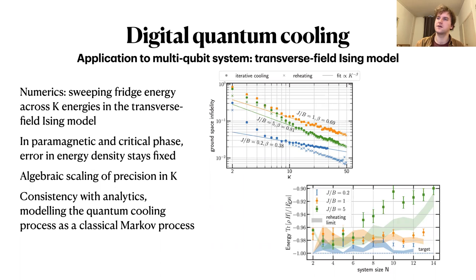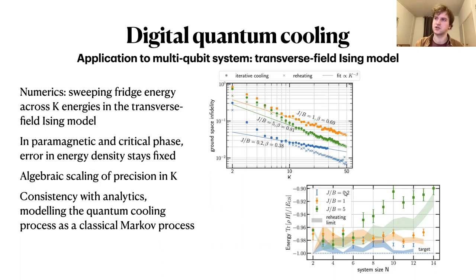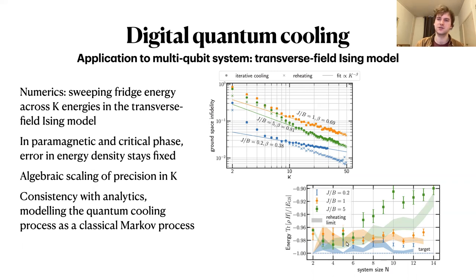On scalability with system size: for fixed k — say five or six — the relative error in the ground state energy stays flat in the paramagnetic regime and the critical regime. However, the error diverges in the ferromagnetic regime, which has to do with topological defects. This can be explained by the same kind of NP-completeness issues you encounter with classical Ising systems, so it makes sense that you have scalability problems here.